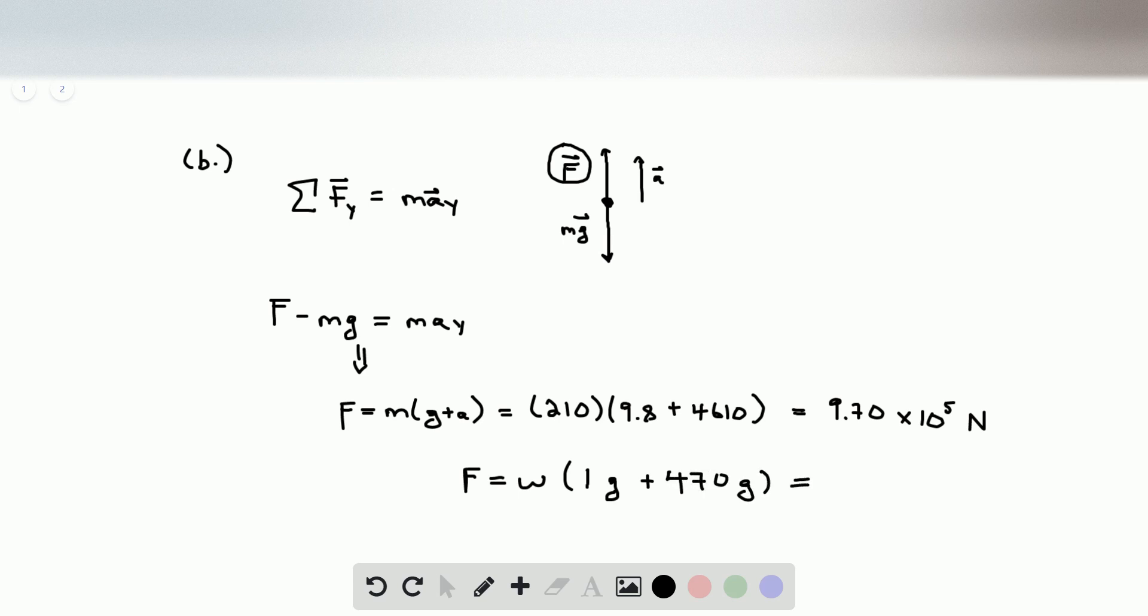And so this is equal to w times 471. And that completes part b. Part c is asking for the time it takes for this to happen. And for this, we're going to use y minus y0 is equal to 1 half v0y plus v times t. We're going to solve for t.